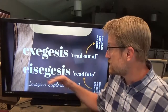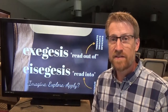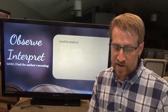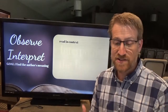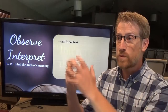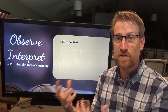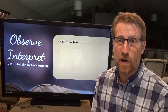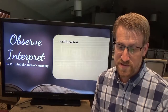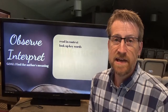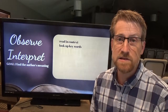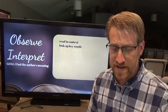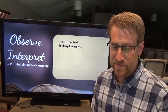We want to do exegesis — we want to read out of the text. So how do we do that? First, read it in context. Make sure you're reading the passage in context to get an overall sense of where it fits. Read it in its historical context — you might need a little help there, and we'll talk about tools in the next session. Look up key words; if words stick out, find ways to look them up and see their original meaning. Find where that author uses them in other places.